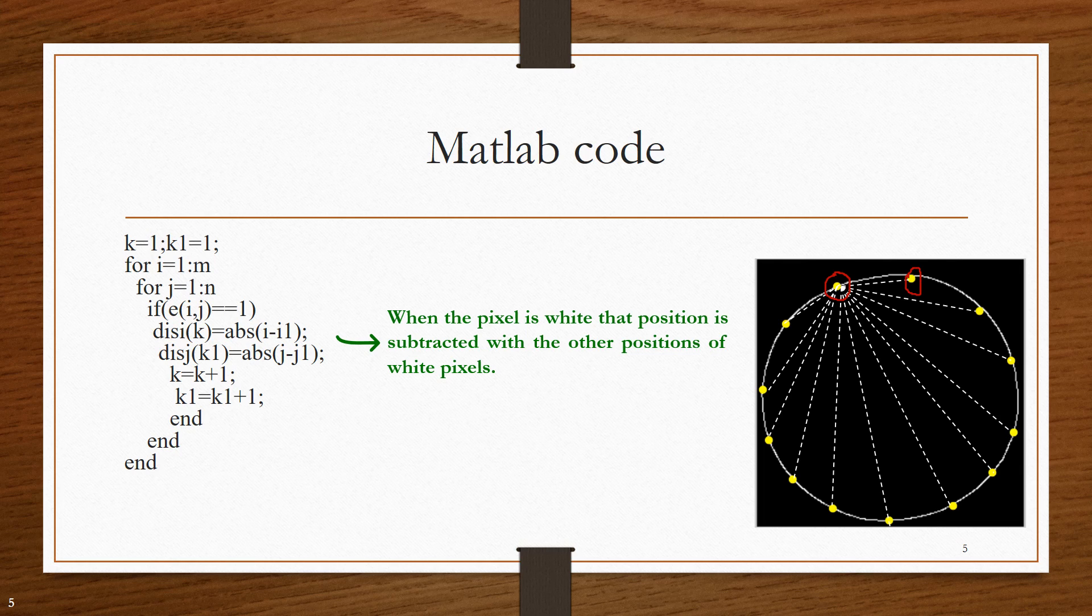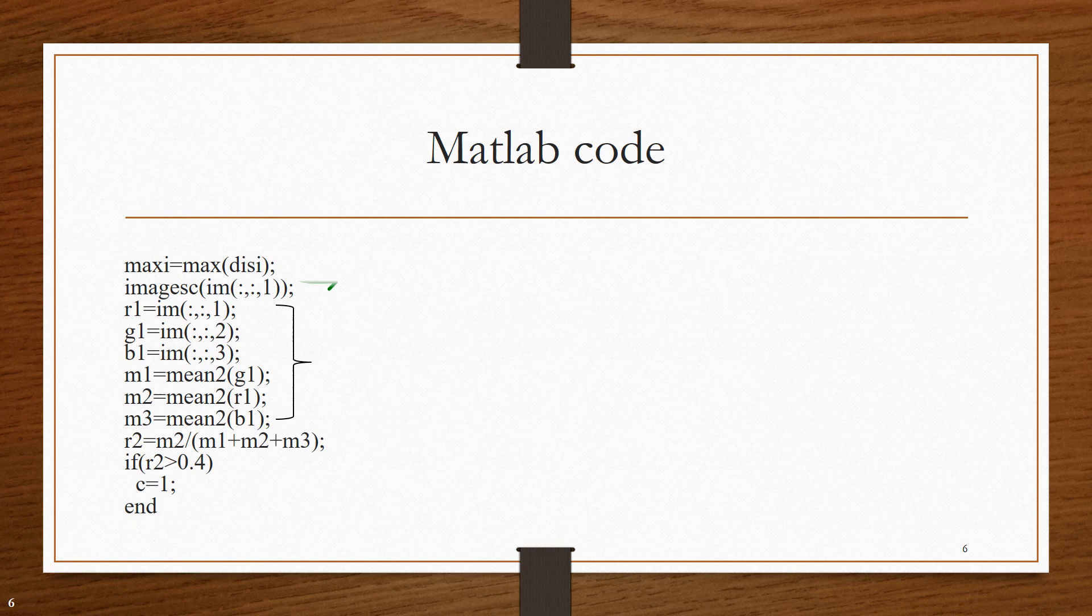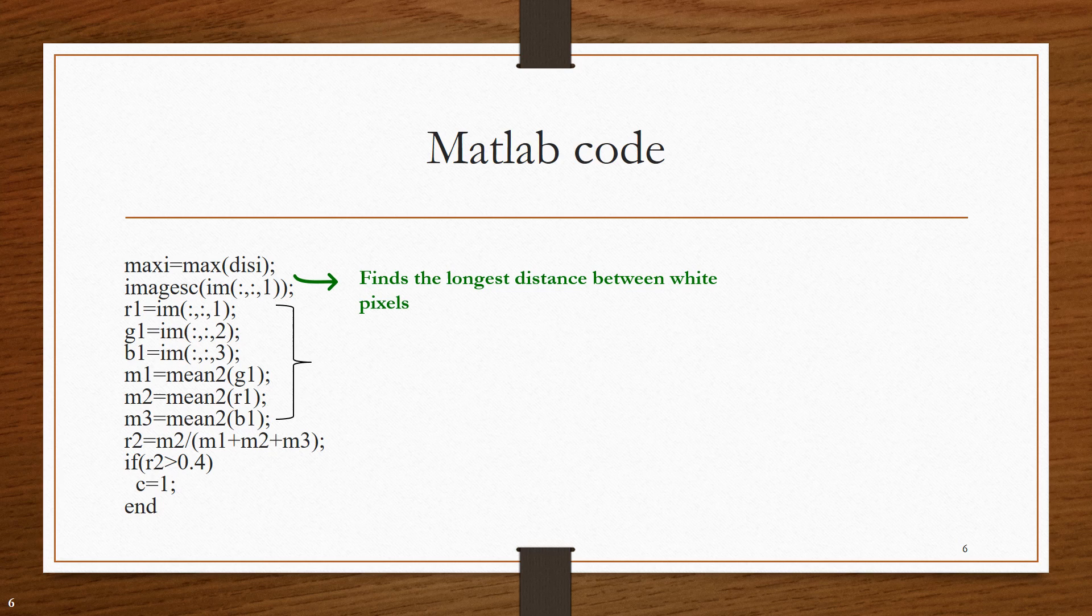Correspondingly, every white pixel is being subtracted from that distance and it is being stored in the variable disi. Distance between white pixels are calculated and stored in the variable disi. Then, the maximum value of this variable is found.